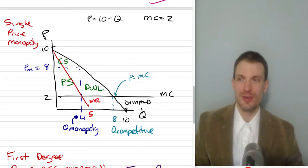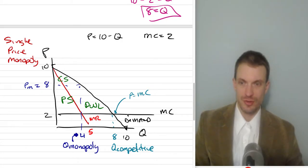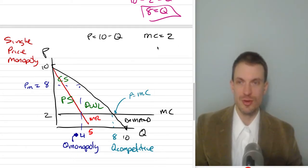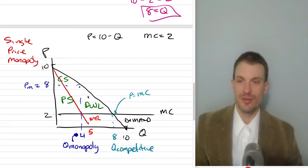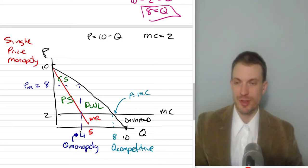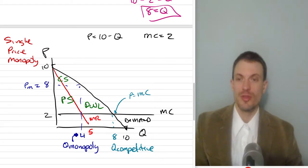We can see this graphically. Here's our single-price monopoly outcome. I've got my demand curve — if price equals 10 minus Q, our horizontal and vertical intercepts are both 10. Marginal cost is a constant 2 for all units produced. Marginal revenue has the same vertical intercept and twice the slope. The monopoly produces at quantity 4, where marginal revenue equals marginal cost, and sells at a price of 8. The competitive firm would sell twice as much — a quantity of 8 at a price of 2.